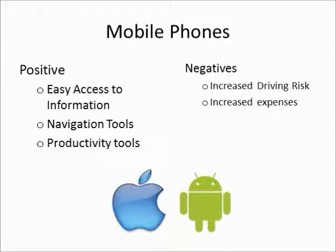Our second example is mobile phones. Mobile phones are great because they give people easy access to information — you can download files from Dropbox, check your schedule, and do this all while walking down the street. There are also navigation tools and productivity apps like task management software. However, negatives include expensive data plans, frequent upgrades for new iPhones, and safety risks such as people changing their Pandora station or texting while driving, which leads to accidents.